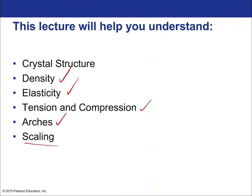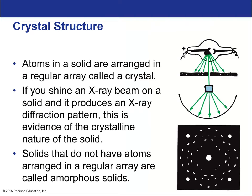Atoms in a solid are arranged in a regular array called a crystal. If you shine an X-ray beam on a solid, it produces an X-ray diffraction pattern — evidence of the crystalline nature of the solid. You get patterns like this. There's a lot of historical study from about 100 years ago doing exactly this. The reason you get a diffraction pattern relates to how light behaves as a wave, which we'll cover later. An X-ray, by the way, is just high-energy light.